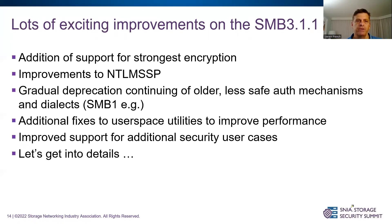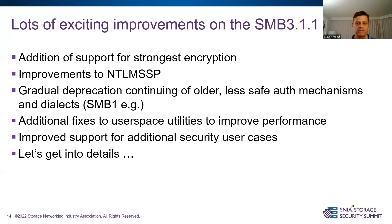Recently SMB 3.11 added support for the strongest encryption type, GCM-256. We've done improvements in the client and now support GCM-256. We've also added additional support in NTLMSSP. We've deprecated and are gradually removing less safe auth mechanisms — for example, those used by SMB1 — just as Windows and Samba are wanting to move away from insecure things and make sure they're not even possible to negotiate in the future. This may take a number of years due to some older devices, but it is very easy to configure the client so it cannot use less secure auth mechanisms. There are also various fixes to user-space utilities to improve performance, and we now support many additional security use cases with the new mount options.